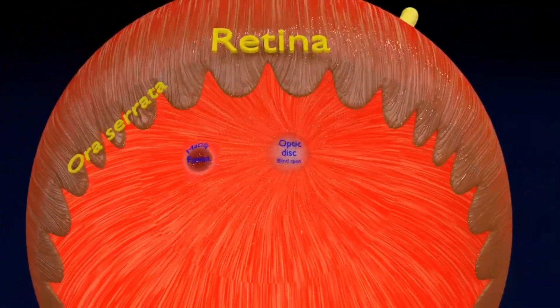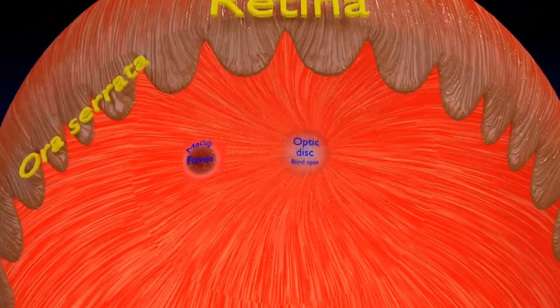Now, you'll see the inner view of the retina after removal of the lens and the vitreous humor. As we zoom in to the posterior part, we can see the fovea, the macula on one side, and the optic disc blind spot on the other side.